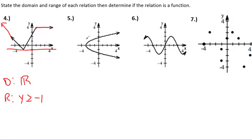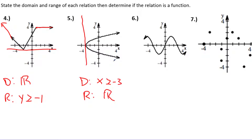For the second problem in this set, the graph only travels to the right forever but stops on the left, so the domain is x greater than or equal to negative 3. It goes up forever and down forever from the two arrows, so the range is all real numbers.